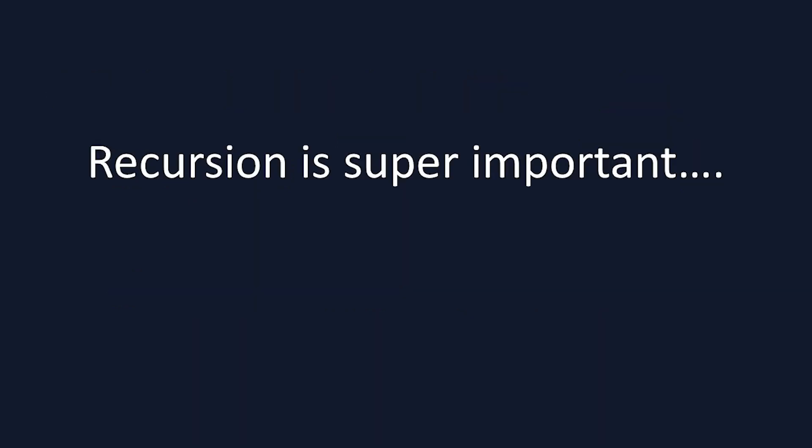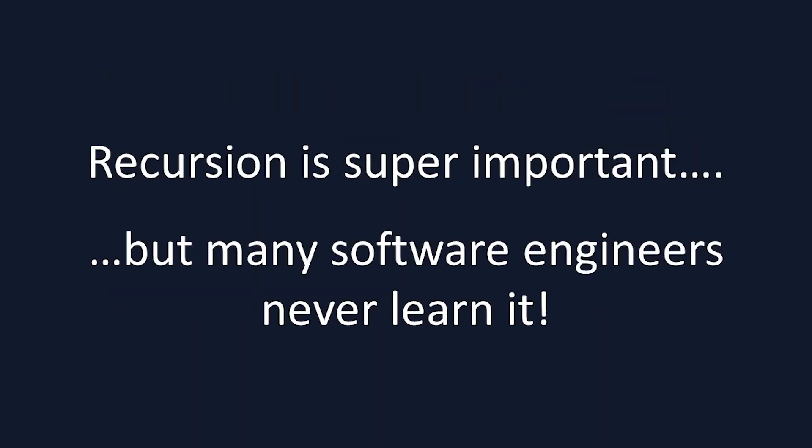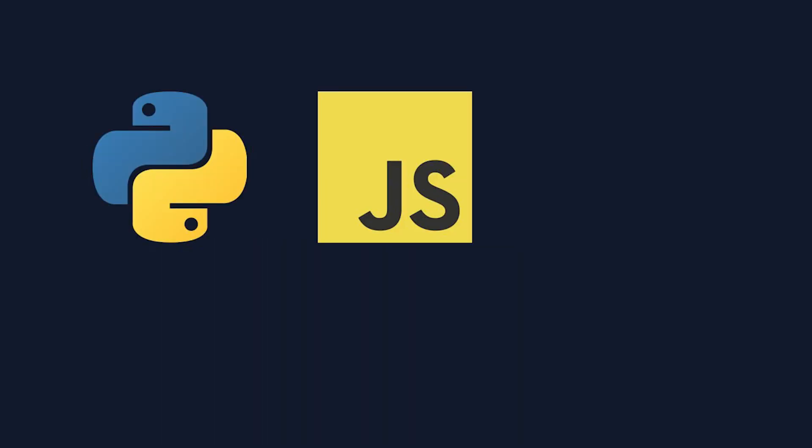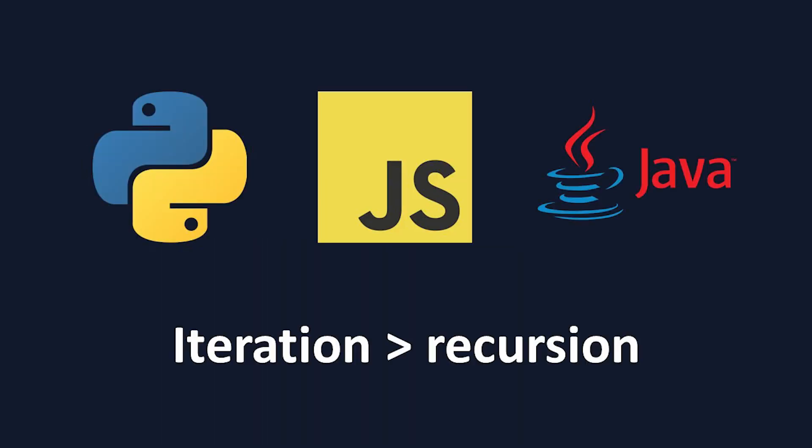Recursion is an important algorithmic concept that many software engineers never learn, because in popular languages like Python, JavaScript, and Java, iteration is used far more than recursion. Iteration is using a loop to repeatedly execute the same instructions, like for loops and while loops.